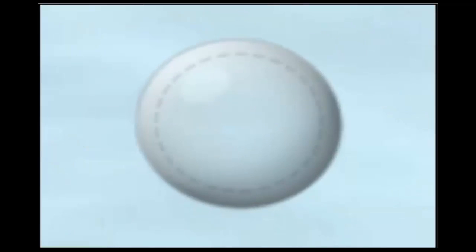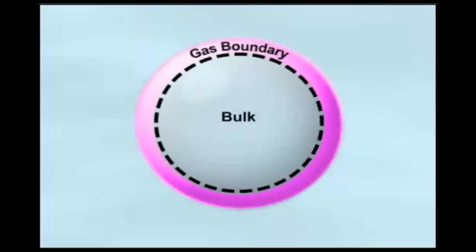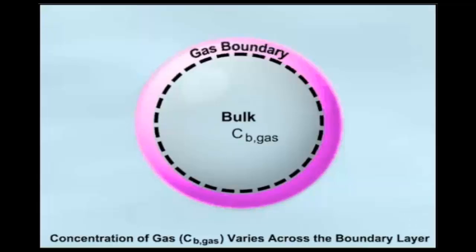Let's break the bubble into two regions: the bulk region and the boundary layer near the interface. The concentration of ammonia is uniform in the bulk region but varies across the boundary layer.